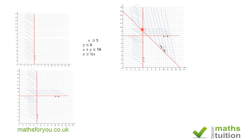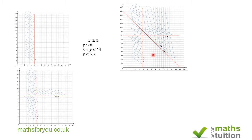Now in this graph I've drawn three lines: x = 5, y = 8, and x + y = 14. We've discussed the first two already. For the third line, the region above it is not valid because x + y would be greater than 14. This means the region below and within all three lines is valid for: x ≥ 5, y ≤ 8, and x + y ≤ 14.